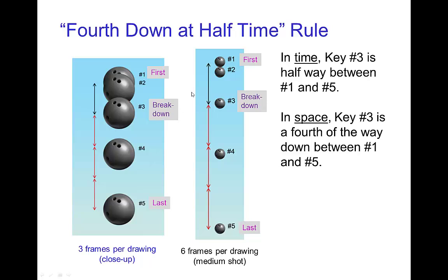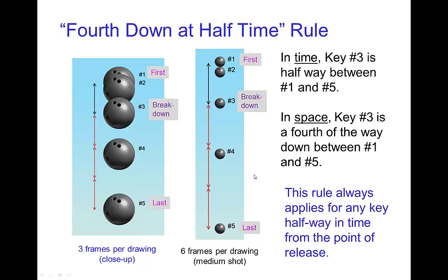We see this in two examples. In the first one, shooting on threes, the position of the bowling ball halfway in time between the first and the last key is a fourth of the way down. A similar example shows drawings all the way down for falling motion over a full twenty-four frames — one second. The breakdown here is twelve frames down from the apex, and again it's a fourth of the way down. This rule applies for any key that's halfway in time from the release point.